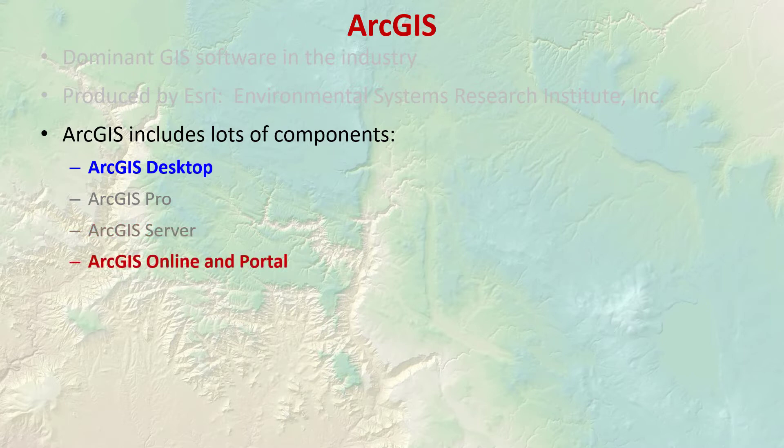There's ArcGIS Online and Portal — these are almost the same and are becoming more and more important components of ArcGIS. They let you keep your data and tools in the cloud, and lots of businesses and agencies use these products to distribute maps to their customers or deliver mobile GIS functionality to their employees. The difference is that ESRI hosts ArcGIS Online on their own system, while Portal is something that you or your employer host on your own system.